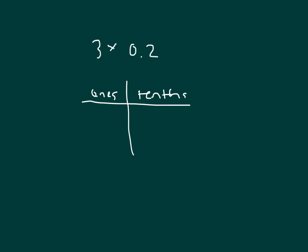3 times 0.2 will make 3 copies of 2 tenths. There's 2 tenths once, twice, and 3 times. So there are 6 of them there. That's 0.6.